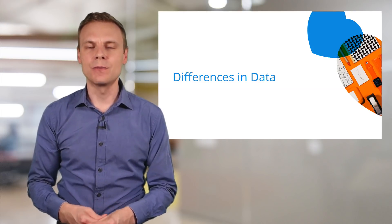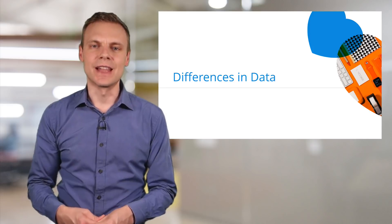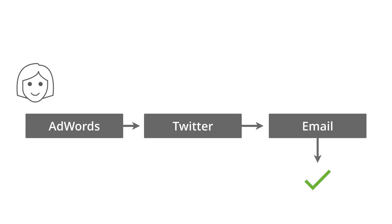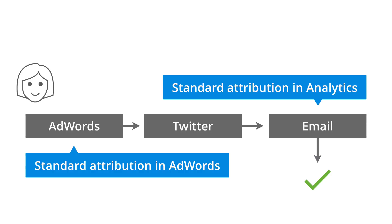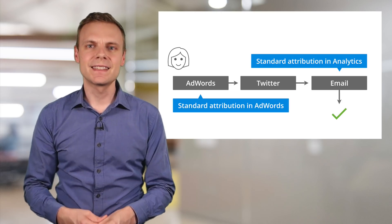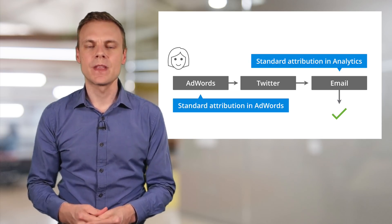Before we look at how to set up AdWords conversion tracking, I want to cover the differences you might find when you look at the data inside Google AdWords compared to Google Analytics. The differences we see are generally the result of attribution. For example, someone first came to our website from our AdWords campaign, then from Twitter, before finally converting from an email campaign. AdWords would show a conversion since there was a click from our campaign in the path, while Google Analytics would attribute the conversion to the email campaign.